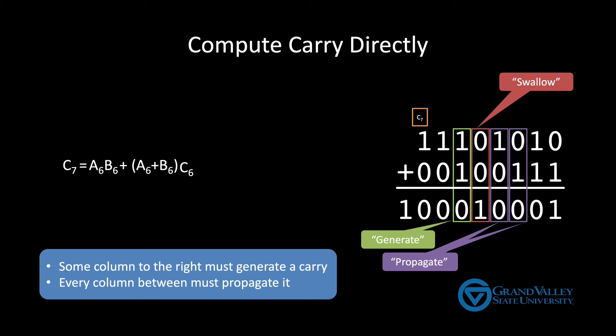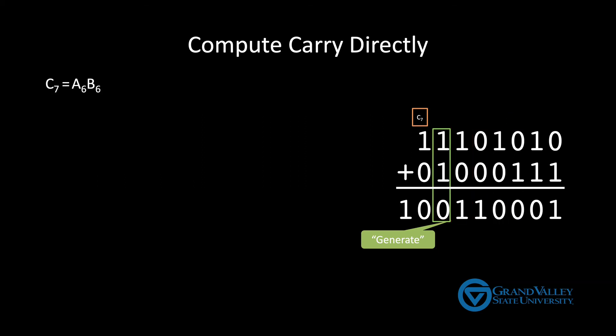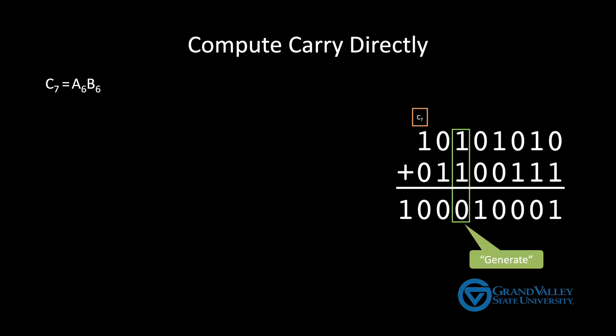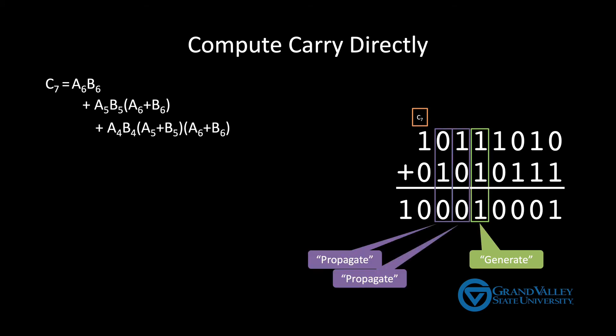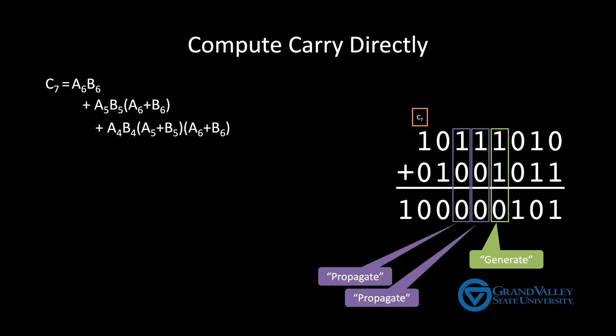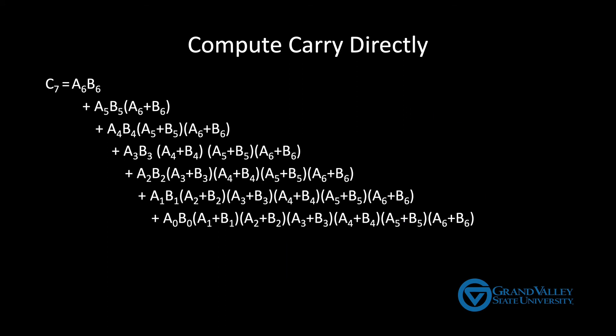So let's see some examples. So as we already saw, there's a carry into column seven if column six generates a carry. There's also a carry into column seven if column five generates the carry and column six propagates it. Similarly, we could have column four generate the carry, and columns five and six propagate it. Or we could have column three generate the carry, and then columns four, five, and six each propagate it. If we continue this pattern, we get this formula, which is certainly not easy to follow. So let's clean it up a bit.